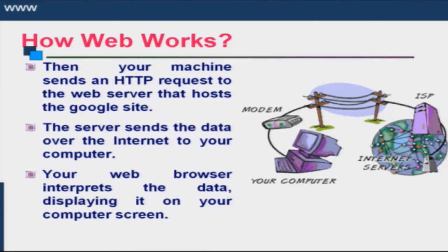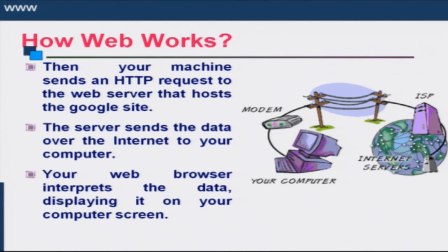When you write www.google.com in the browser, the browser first requests a DNS server — a domain name server — to get the mapping between the name and the IP address. www.google.com is called the domain name, and the DNS server maintains a mapping between the domain name and the IP address of that server. The browser requests the DNS server for the IP address of www.google.com, and once it gets the IP address, it sends an HTTP request to the Google web server to request the content.